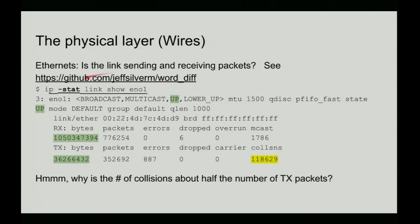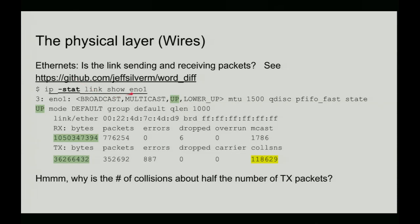This presentation is on Google Docs — I made it public — and a lot of the software I'm going to discuss is on GitHub. Looking at the link statistics, I discover the link is up, it's receiving bytes and transmitting bytes, which is good. The problem is there are an extraordinary number of collisions and I don't know why, because there's just this laptop, my server in the basement, and a Juniper MX210 switch. Where are all these collisions coming from? I haven't a clue. This is already too high, and if I was really concerned I'd investigate further.